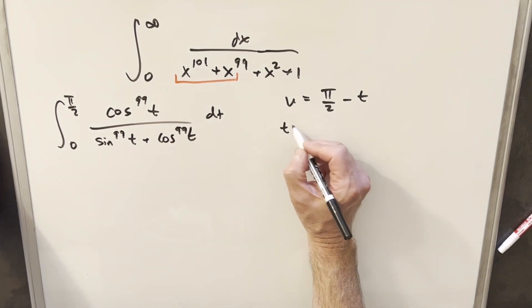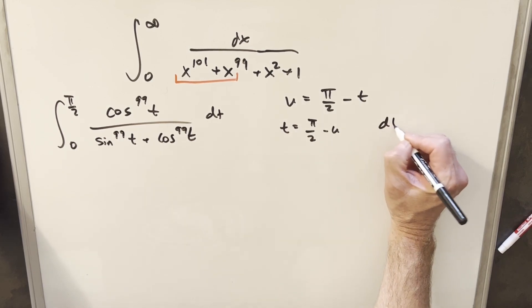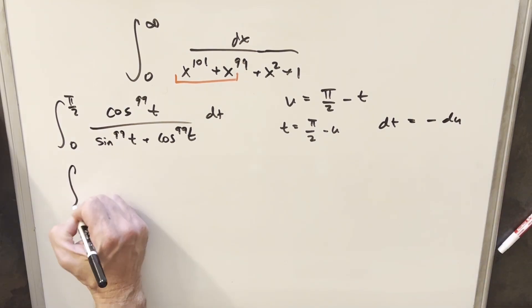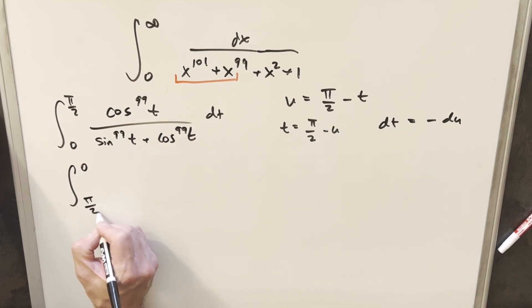Then while we're at it, let's just solve for t. t is going to be pi over 2 minus u. And so our dt value is going to be minus du. Then making this substitution, we plug a pi over 2 in, we have 0. We plug a 0 in, we have pi over 2.